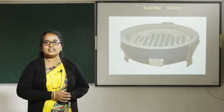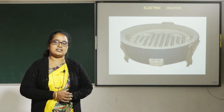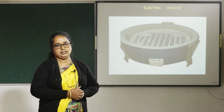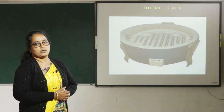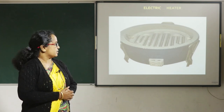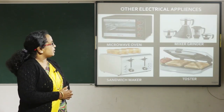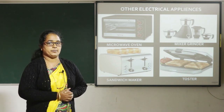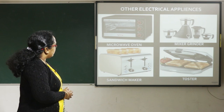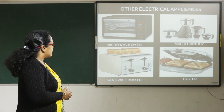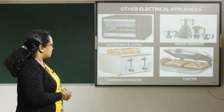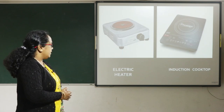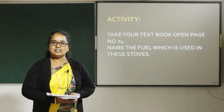Electric heater. Electricity makes the heater quite hot and food is cooked over it. Electric heater is also called an electrical appliance. Children, what are the other electrical appliances used in our kitchen? Microwave oven, mixer grinder, sandwich maker, toaster, electric heater, and induction cooktop.